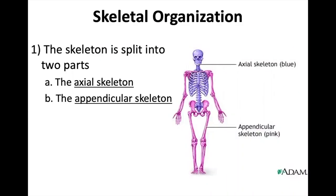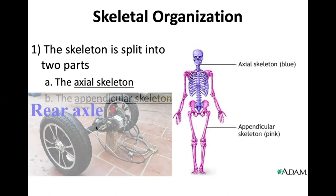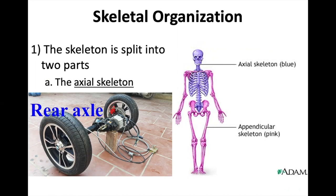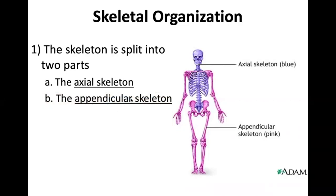Before we start naming these bones, let's talk about organizing them. We can lump all of our bones into one of two categories: the axial skeleton, shown here in purple, or the appendicular skeleton, shown here in hot pink. Axial kind of sounds like axle — a straight piece of metal going from one tire to another, holding them together. That's what your axial skeleton is: a straight line right down the middle of the body. Appendicular has to do with your appendages, which is another word for your limbs — upper limbs and lower limbs.